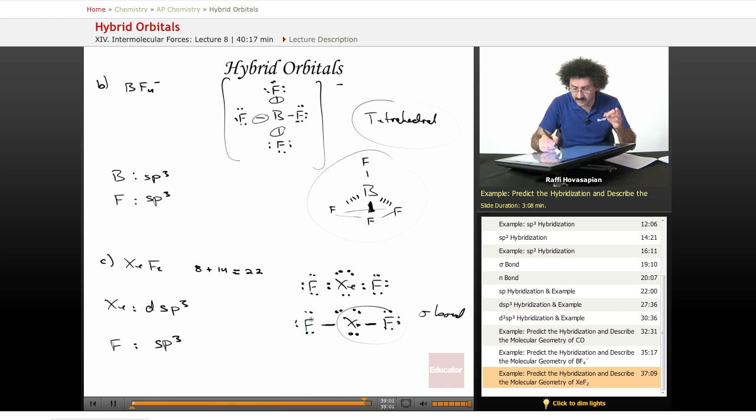The lone pairs on fluorine occupy the other SP3 hybrid orbitals on fluorine. And the three lone pairs on xenon occupy the last three DSP3 hybrid orbitals on the xenon atom.